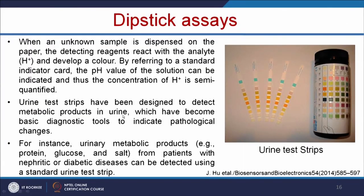Similarly, urine test strips have been designed to detect metabolic products in the urine, and have become basic diagnostic tools to indicate pathological changes. For example, urinary metabolic products like glucose, protein, and salt from patients with nephrotic or diabetic disease can be easily detected using a standard urine test strip. We can dip these strips in the patient's urine sample and easily analyze the presence of glucose, protein, or salt.